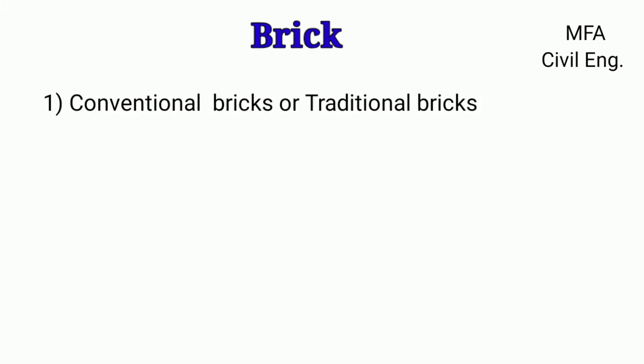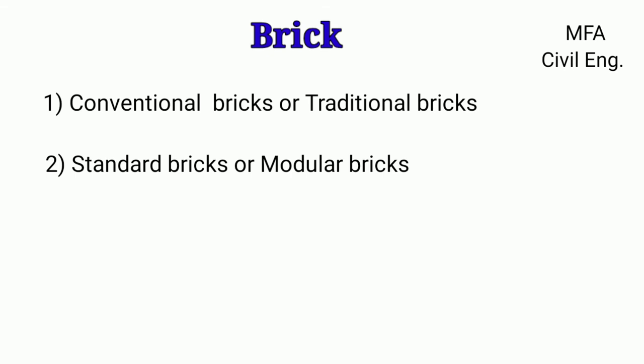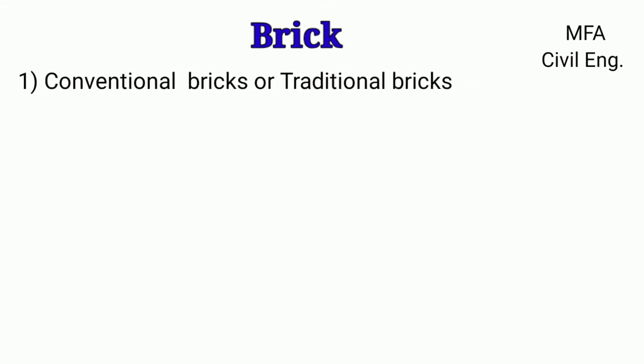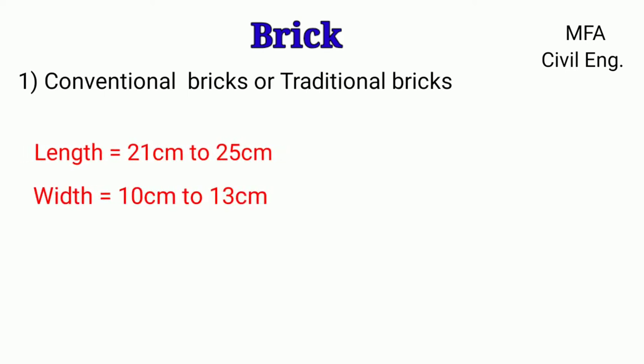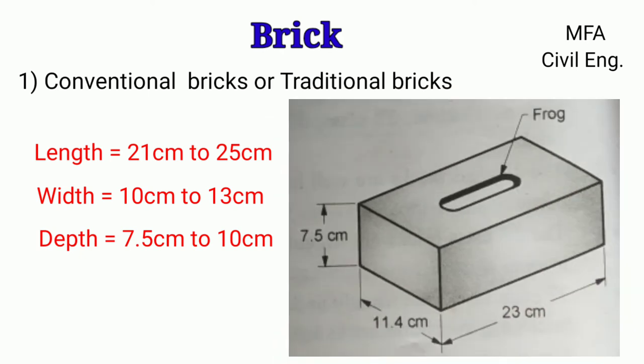Bricks are classified into two categories: conventional brick (traditional brick) and standard brick (modular brick). The dimensions of a conventional brick vary from 21 to 25 cm in length, 10 to 13 cm in width, and 7.5 to 10 cm in height in different parts of the country. The commonly adopted size of a conventional brick is 23 cm × 11.4 cm × 7.5 cm.